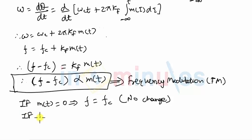Now let us say if you apply a modulating signal which starts taking positive values, in that case f also will be greater than fc because if m is positive that means f has to be greater than fc.